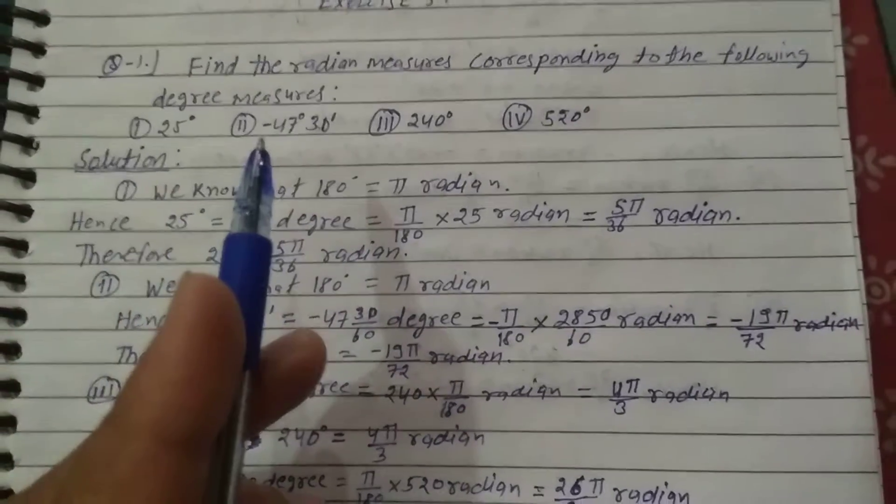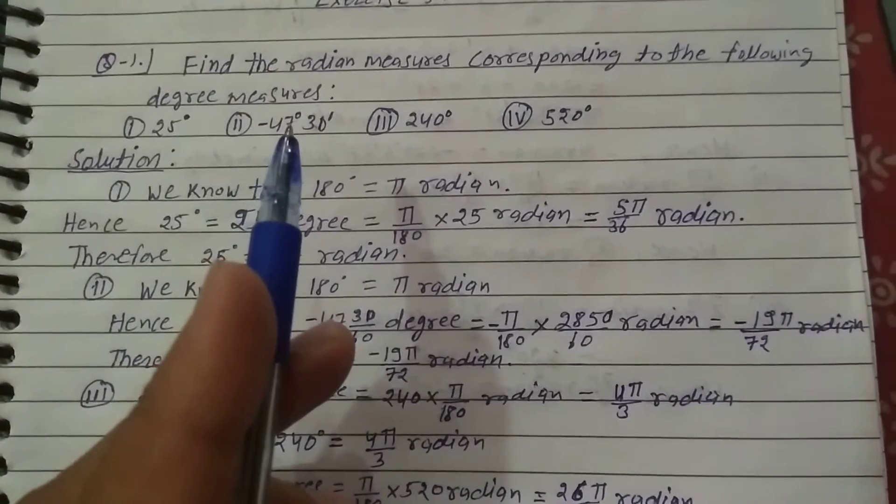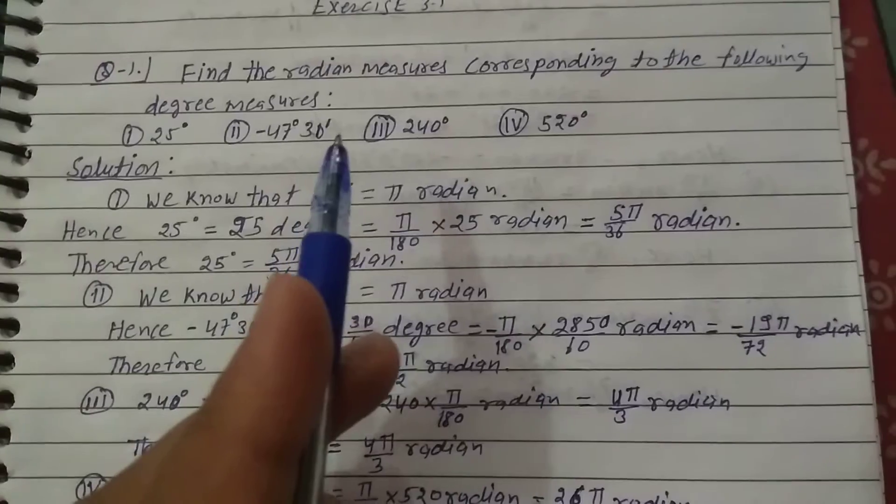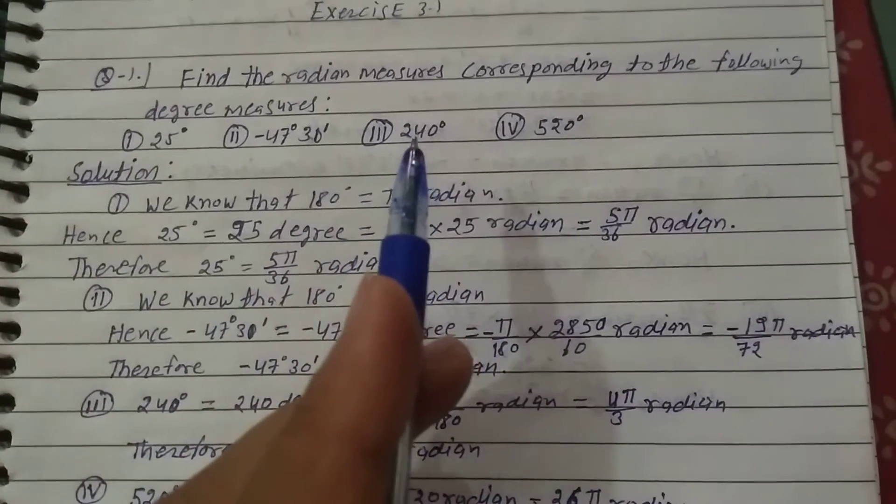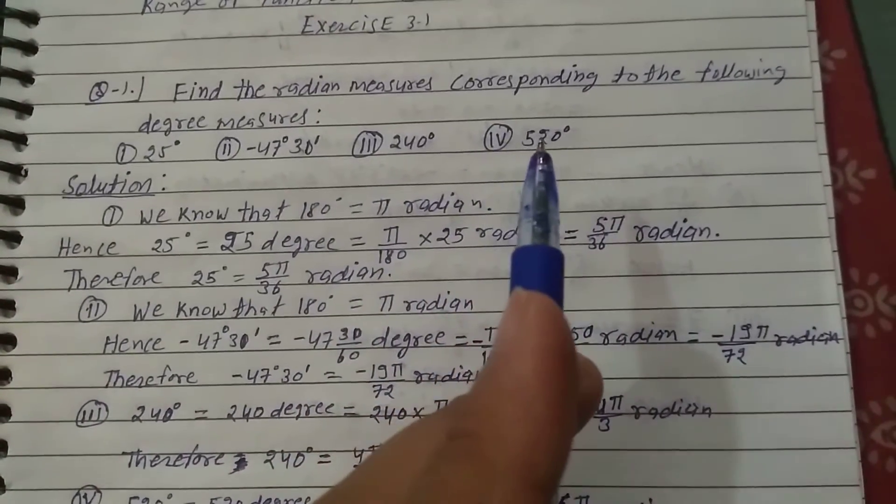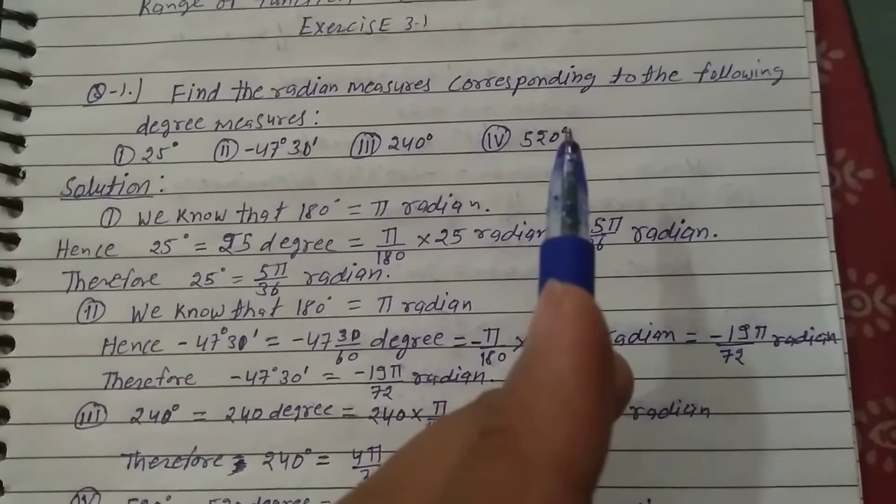First: 25 degrees. Second: -47 degrees 30 minutes. Third: 240 degrees. Fourth: 520 degrees.